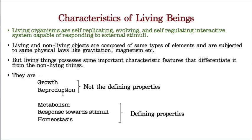Growth and reproduction are not defining characters — that means not all organisms show growth and reproduction. For example, one unicellular organism may never grow. But still it is a living organism. Some people never marry and never give birth to babies — that does not mean they are not living organisms. So these two properties are not compulsory.